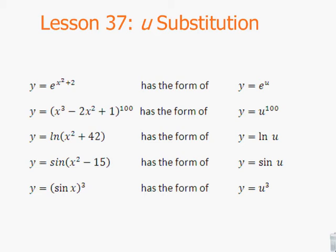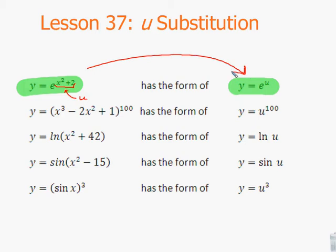We're going to be applying it here to calculus, differentiating to find dy in terms of dx. Looking at these first five lines, we have y equals e to the x squared plus 2. We can recognize that as y equals e to some power. We use u to represent an expression, so that part becomes our u. Instead of y equals e to the x squared plus 2, we put y equals e to the u, which is easier to differentiate. The next one is really something to the 100th power — x cubed minus 2x squared plus 1 — but we just say it's u to the 100th power.